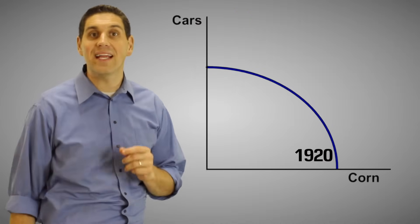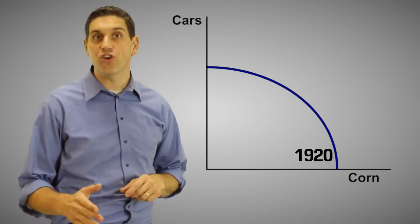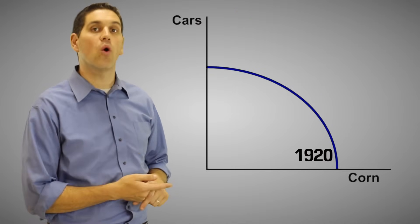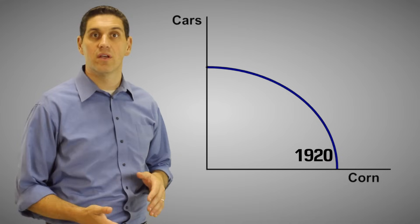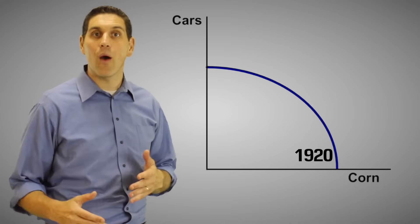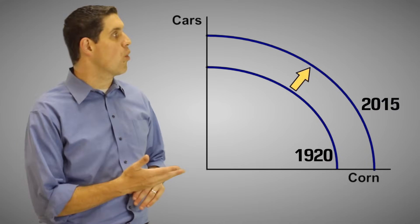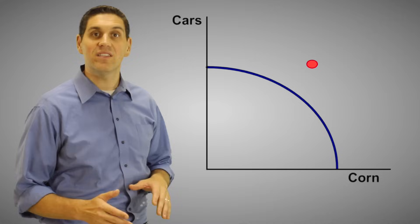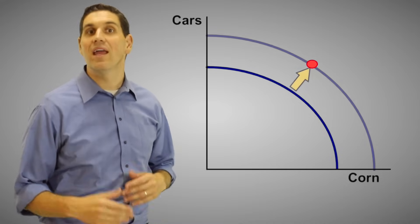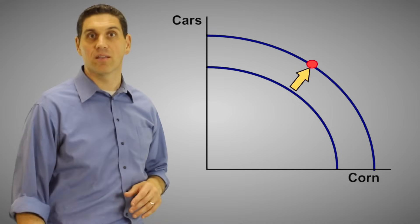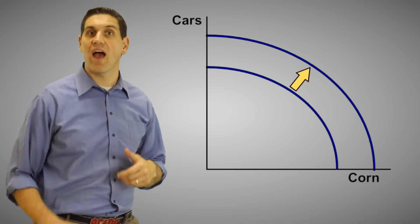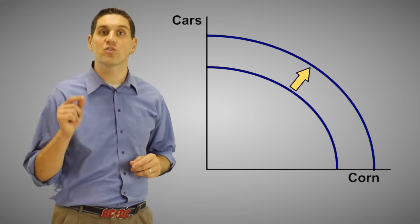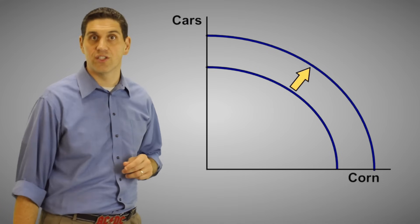For example, in 1920 there's a certain number of cars and corn that we can produce. But now we can produce way more than we did before. That point right there that was once impossible is now possible. This is because we have new and better resources and because we have better technology.